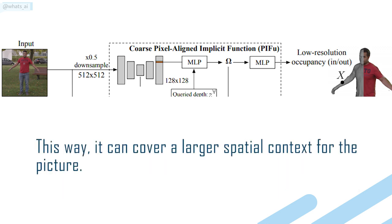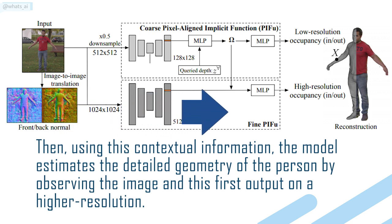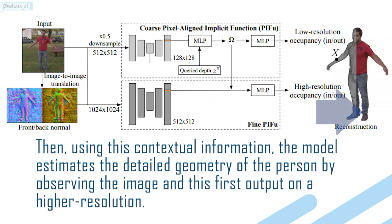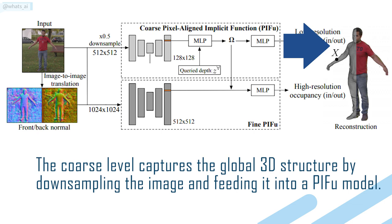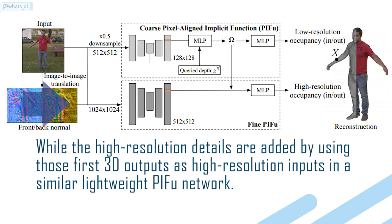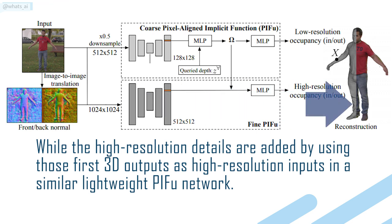This way, it can cover a larger spatial context for the picture. Then, using this contextual information, the model estimates the detailed geometry of the person by observing the image and this first output at a higher resolution. The coarse level captures the global 3D structures by downsampling the image and feeding it into a PIFu model, while the high-resolution details are added by using those first 3D outputs as high-resolution inputs in a similar lightweight PIFu network.